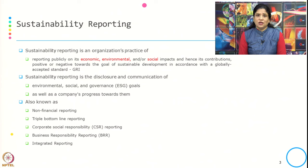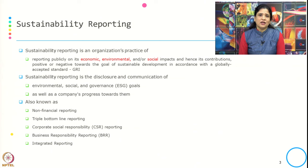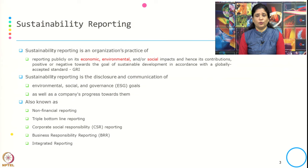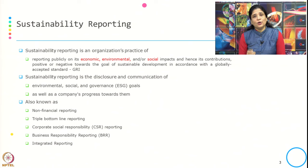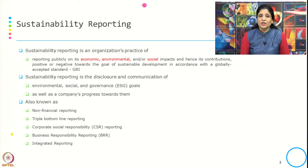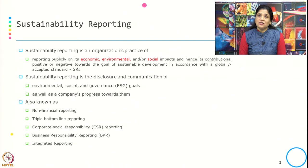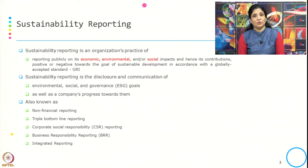A typical question is how a sustainability report differs from annual reports. An annual report is a financial report — it also considers health, environment, safety and social responsibility — but a sustainability report is a standalone report that follows accepted standards defining what should be part of sustainability disclosure. Sustainability reporting is the disclosure and communication of environmental, social and governance (ESG) goals, as well as a company's progress towards them.